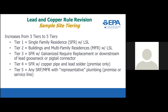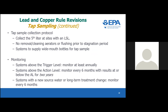In terms of TAP sampling — and this first bullet applies only to systems with a lead service line — there will be a requirement for a fifth liter to be collected at sites. There will be no more allowance for instructions that call for the removal or cleaning of aerators or flushing prior to stagnation, and systems are required to provide wide-mouth bottles to mimic the flow of water at a tap that you would normally use. If systems exceed the trigger level, they are required to stay on annual monitoring — no longer eligible to reduce to triennial. Systems above the action level must monitor every six months with results at or below the action level for two years. Systems that have a source change or a long-term treatment change will need to monitor every six months, likely again for two years, below the action level before they can go to reduced monitoring.